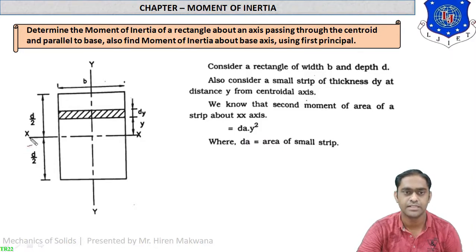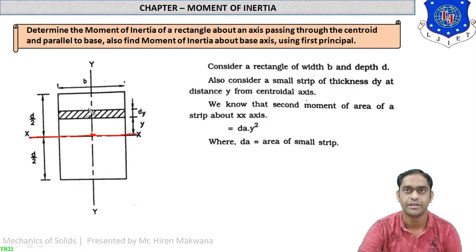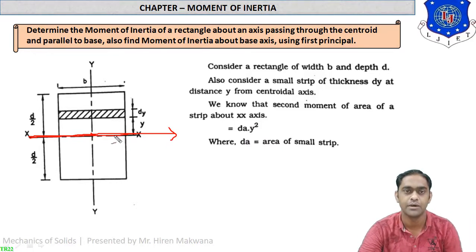In this figure, this is the centroidal horizontal axis passing from the CG itself. Similarly, this is the centroidal vertical axis passing from the centroid. We have to find the moment of inertia about the axis parallel to the base and passing from the centroid. After that, we will calculate the moment of inertia about the base of the rectangle.